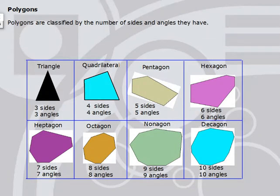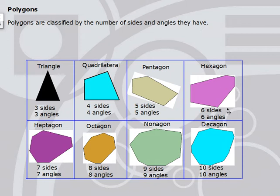Now that we know what a polygon is, we can take polygons and classify them. Polygons are classified by the number of sides and angles they have. A triangle has three sides and three angles. A quadrilateral has four sides and four angles. A pentagon has five sides and five angles. A hexagon has six sides and six angles. A heptagon has seven sides and seven angles. An octagon has eight sides and eight angles.